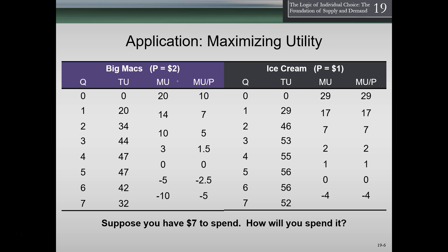If we think about just two types of things we can purchase — Big Macs and ice cream — we have quantity, total utility, marginal utility, and marginal utility per dollar for each. Starting with zero units, if we buy one Big Mac our total utility goes up to 20, giving us a marginal utility of 20. Since Big Macs cost $2, we divide by 2 to get a marginal utility per dollar of 10.